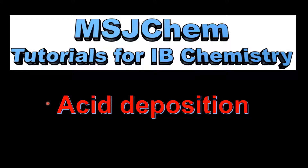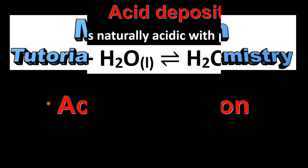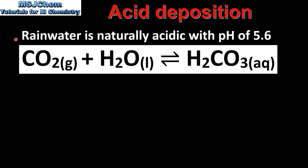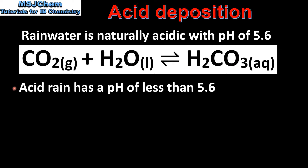This is MSJChem. In this video I'll be looking at acid deposition. Normal rainwater is naturally acidic with a pH of 5.6, due to the presence of carbon dioxide in the atmosphere which dissolves in water to form carbonic acid. Acid rain has a pH of less than 5.6.